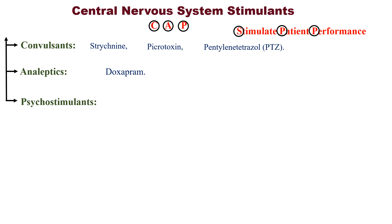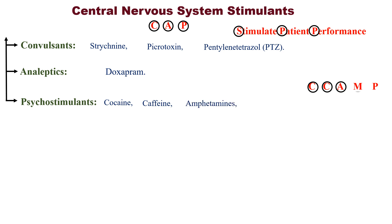The last category is psychostimulants. Remember the trick C-CAMP: C for cocaine, C for caffeine, A for amphetamine, M for methylphenidate, and P for pemoline.